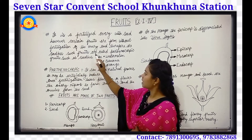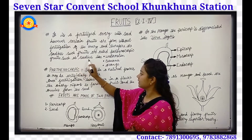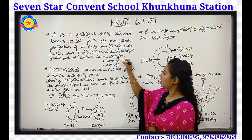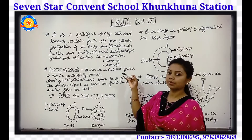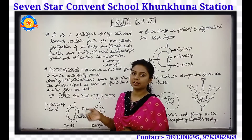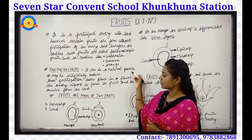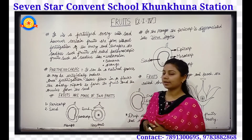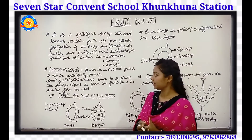Such fruits are called parthenocarpic fruits. Seedless fruits like watermelon, banana, and orange — these are the seedless fruits. This parthenocarpic process can be a natural process or may be artificially induced. It can be natural or artificial.